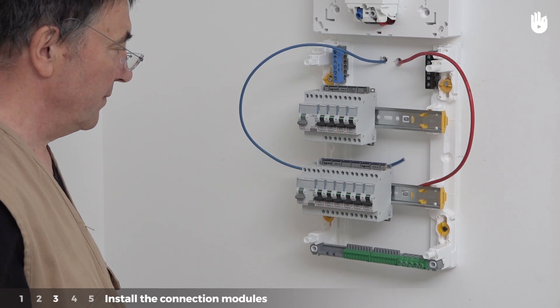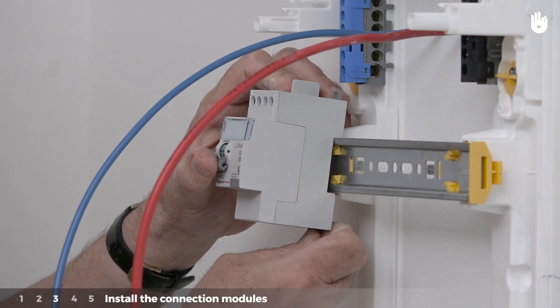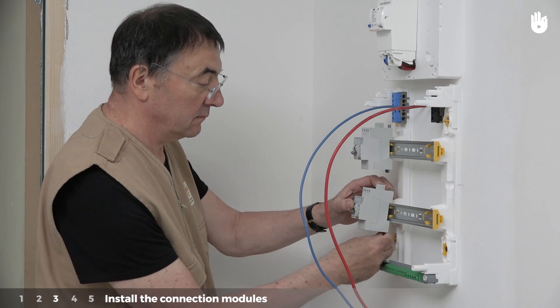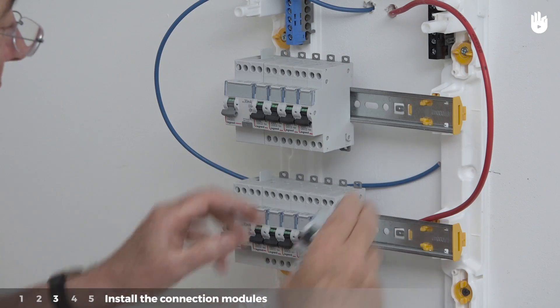Step 3. Install the connection modules. The circuit breakers clip onto the rail. At the beginning of each row, attach the 30mA individual circuit breaker. Then install the individual circuit breakers in order of decreasing load.